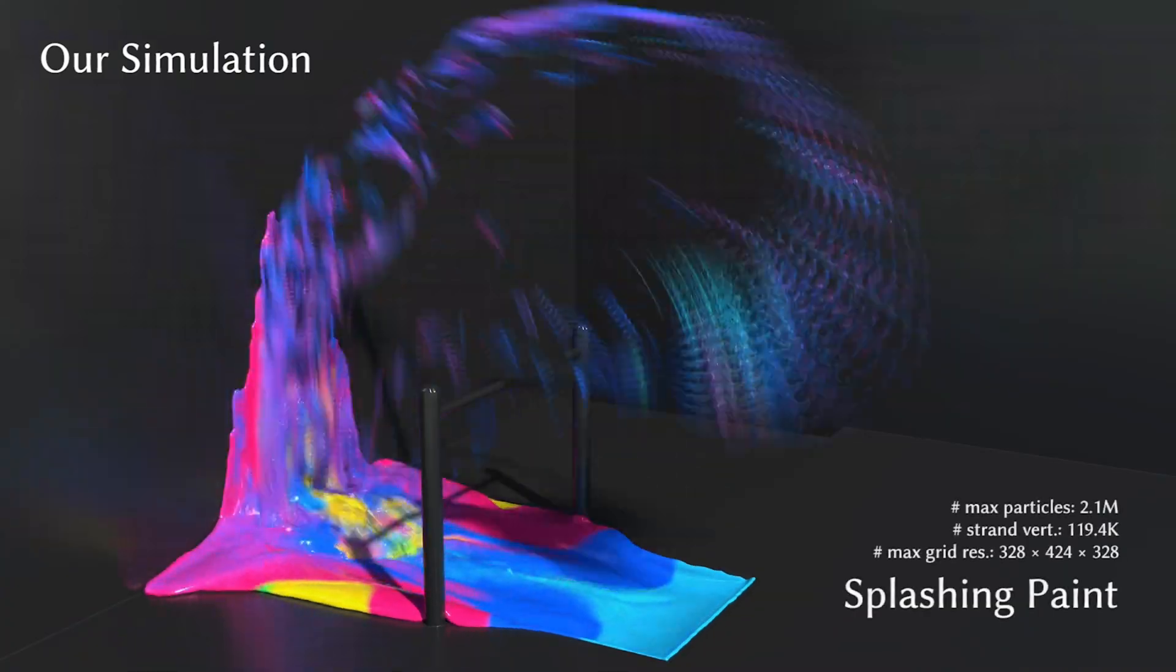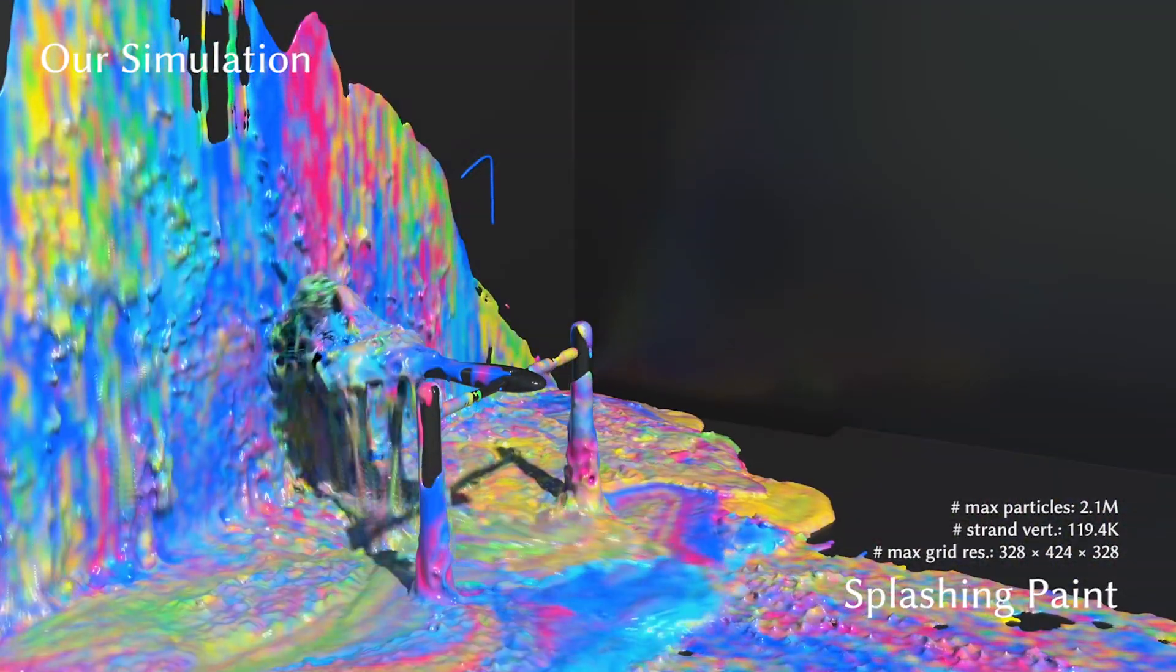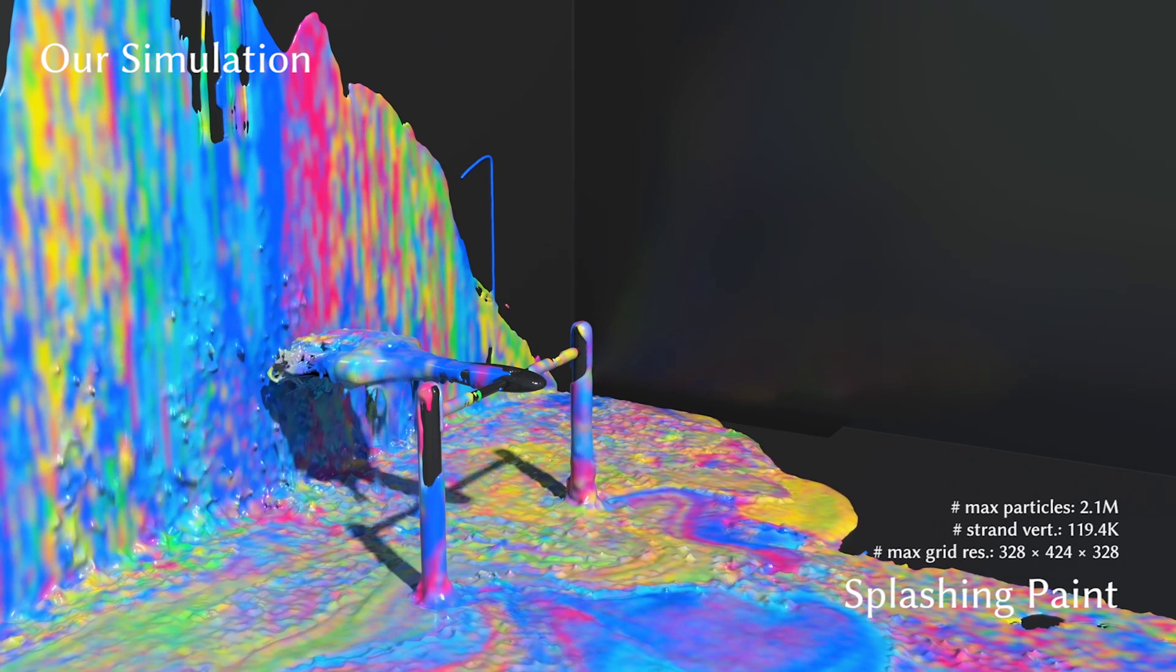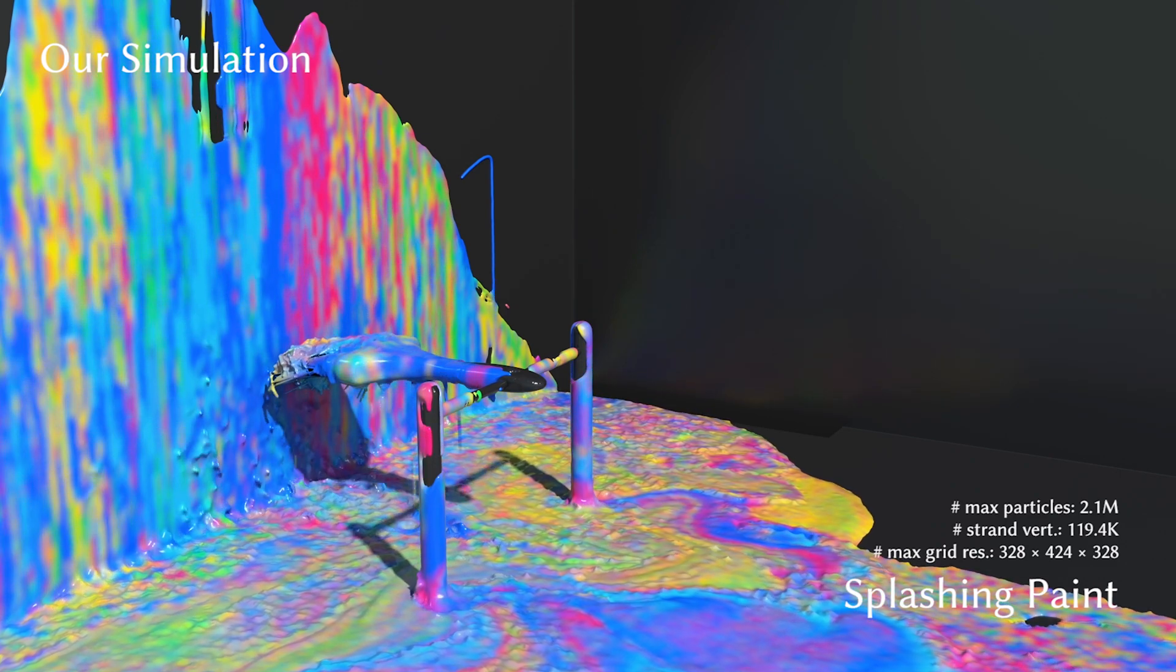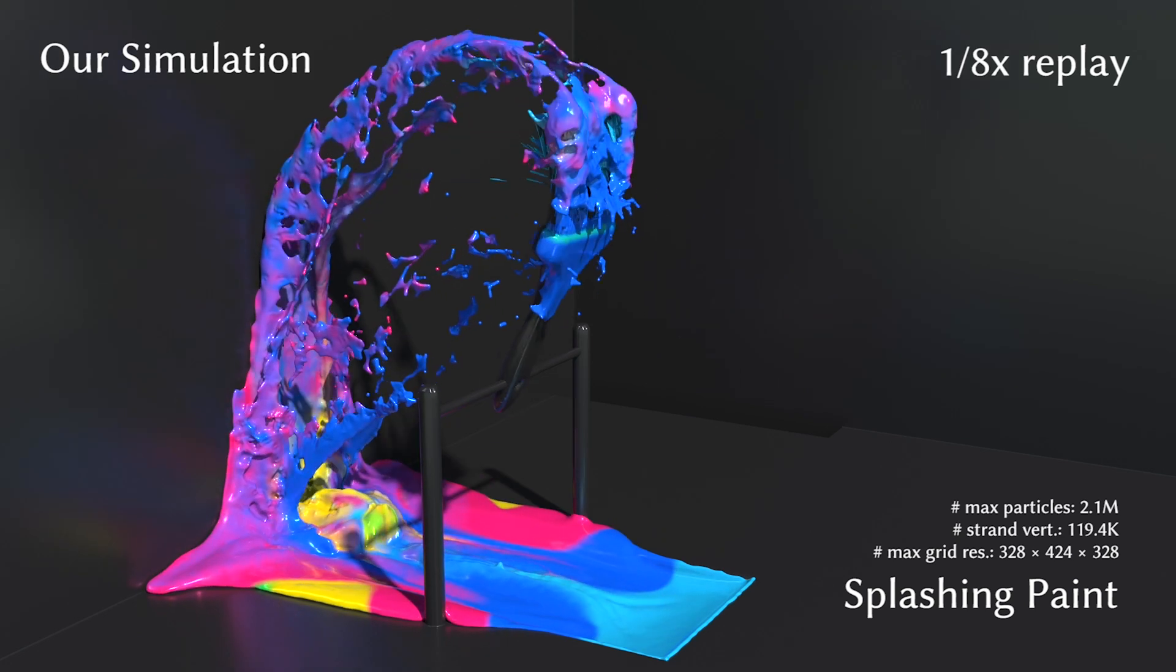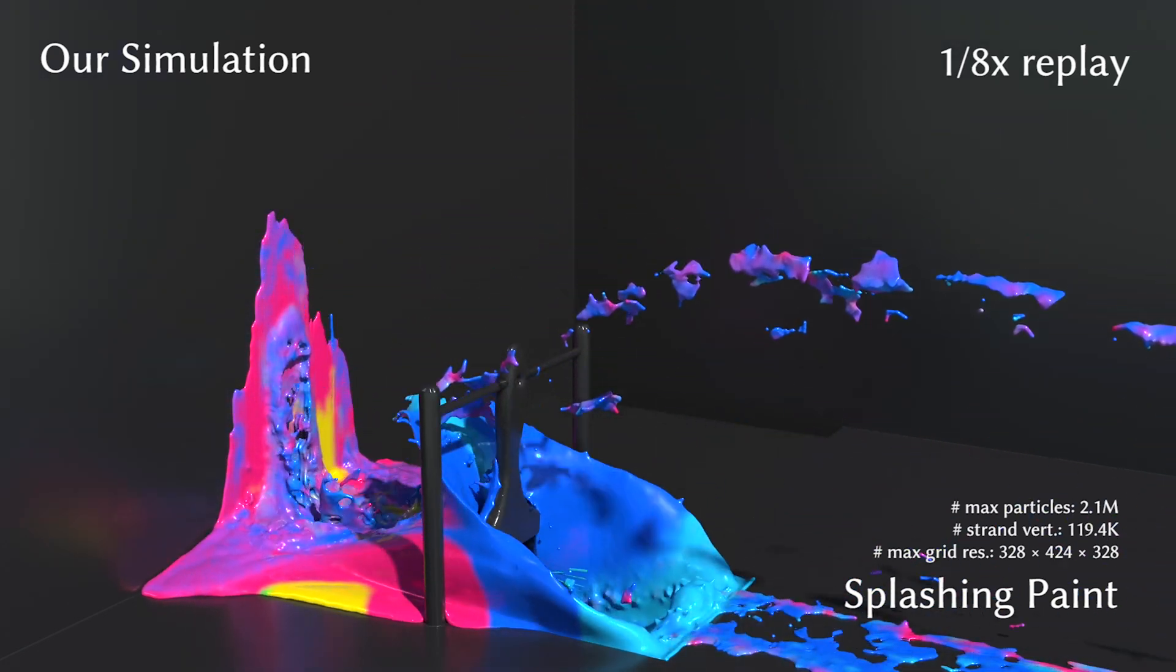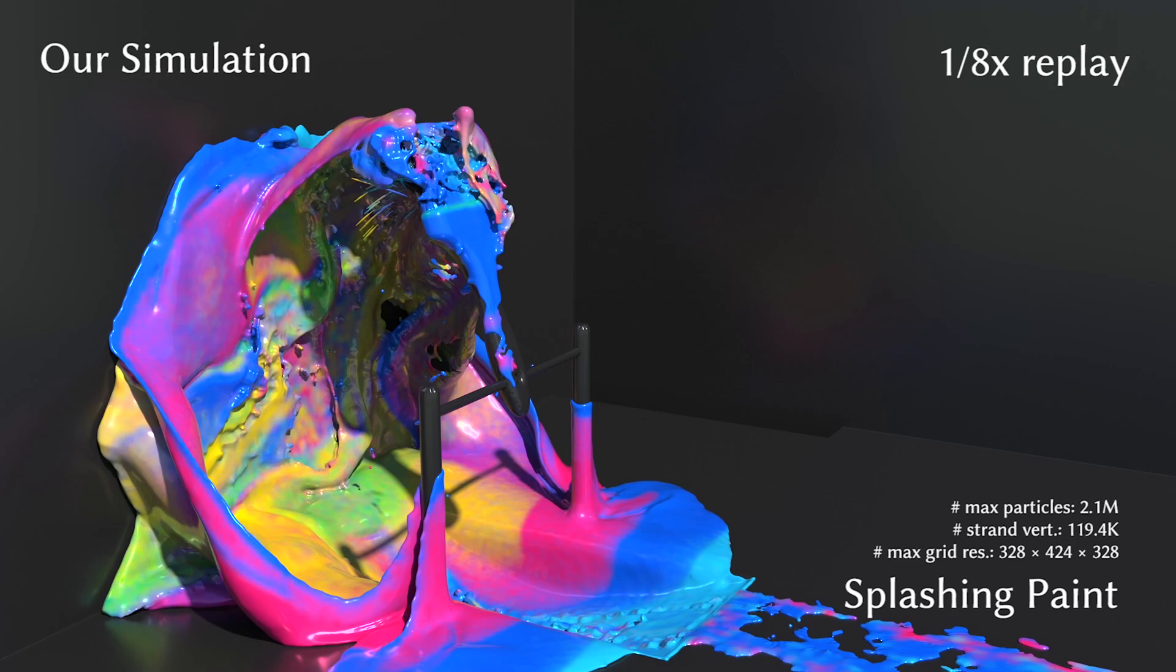Our model can predict the rich dynamic interactions between shear-dependent fluid and strands. For example, here we simulate a rotating brush splashing through oil paint, an elasto-visto-plastic material. The oil paint forms thin sheets while the bristles of the brush stick and tangle.